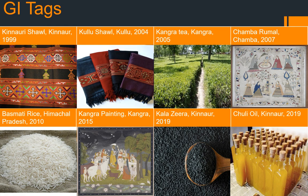Now the Geographical Indication Tags of Himachal Pradesh. Kinnauri Shawl from Kinnaur was given a GI Tag in 1999. After 5 years, Kullu Shawl from Kullu was also given a GI Tag. Then Kangra Tea from Kangra was given a GI Tag in 2005. Chamba Rumal from Chamba was given in 2007. Three years later, Basmati Rice was also given to Himachal Pradesh, as I explained in the Uttar Pradesh video that Basmati Rice has been given to many northern states in India. Then Kangra Paintings from Kangra were given in 2015. Kala Zeera from Kinnaur and Chilli Oil also from Kinnaur were given together in 2019.